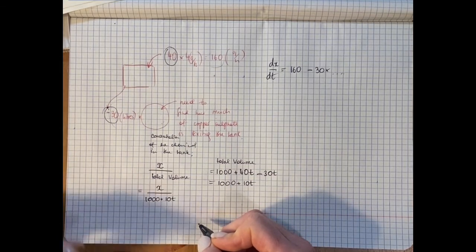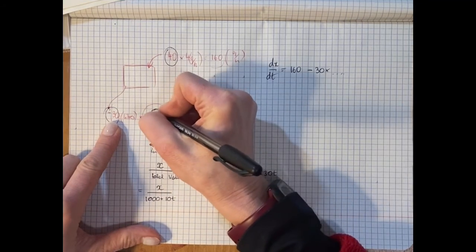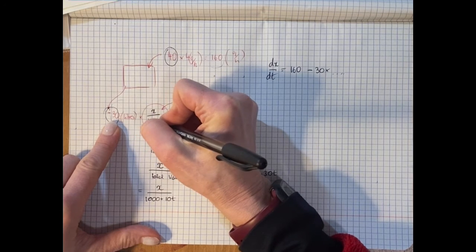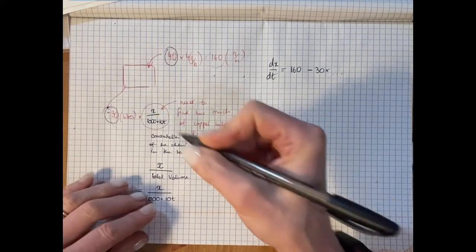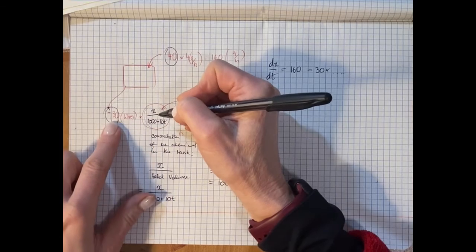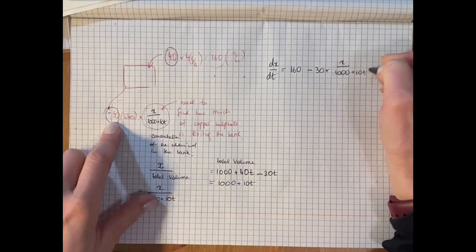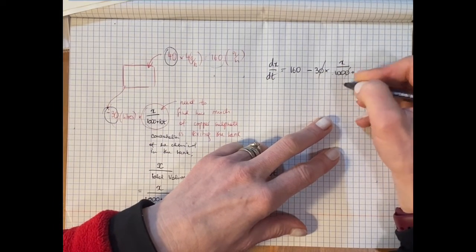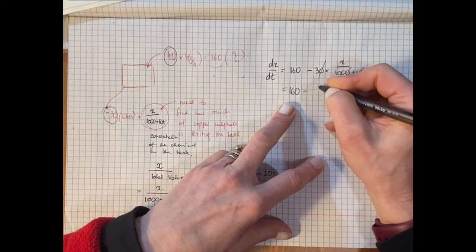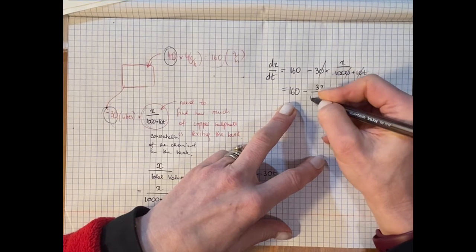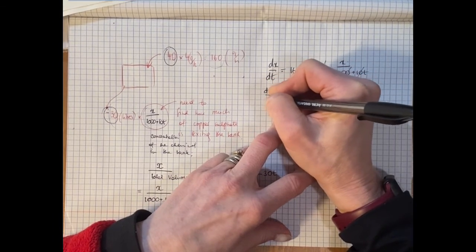Multiplying that concentration by the 30 litres that escape gives the amount of copper sulphate leaving per hour. Tidying up by dividing numerator and denominator by 10 gives 3x/(100 + T). So dx/dt = 160 − 3x/(100 + T). That completes part A.